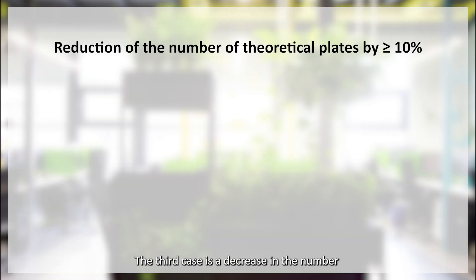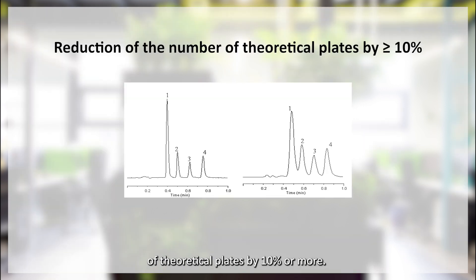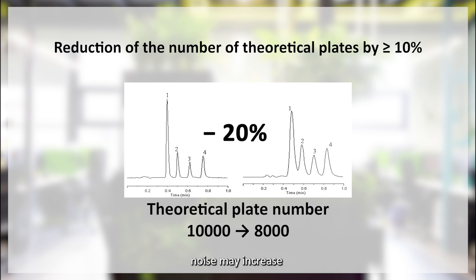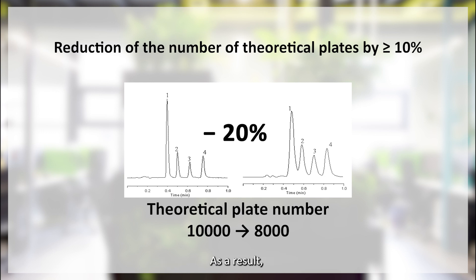The third case is a decrease in the number of theoretical plates by 10% or more. If a column becomes dirty, noise may increase or peak shapes may deteriorate. As a result, the number of theoretical plates will gradually decrease.